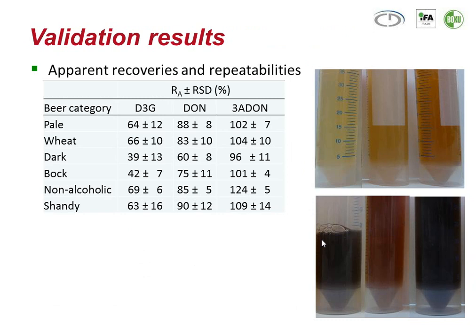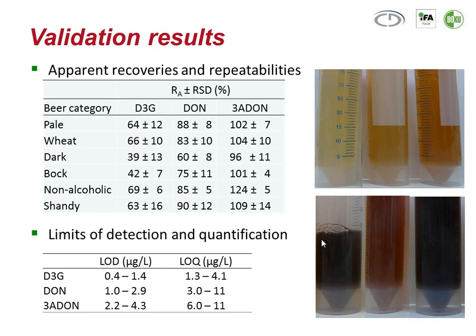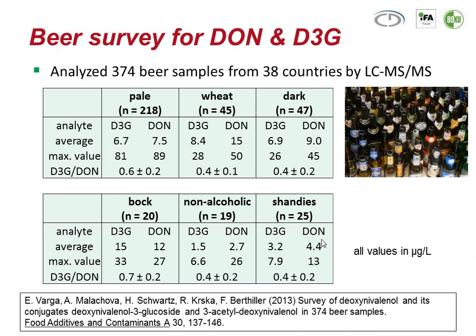We did not just take the matrix beer as a whole, but divided it into six categories: pale beer, wheat beer, dark beer, bock beer, non-alcoholic beers, and shandies — mixtures of beer with lemonade. The recovery and repeatabilities for the different analytes are quite different across beer categories. Overall, we got quite acceptable recoveries for deoxynivalenol and its fungal precursor 3-acetyldeoxynivalenol, and still acceptable, though sometimes a little bit low, recoveries for its glucoside. The limits of detection and quantification are in the range where we expect the compound to occur in nature.